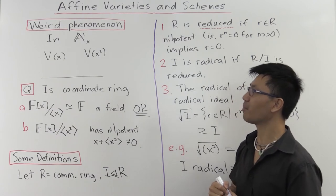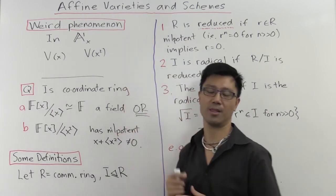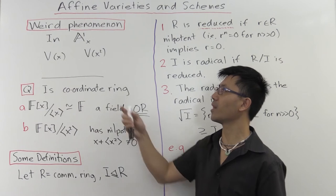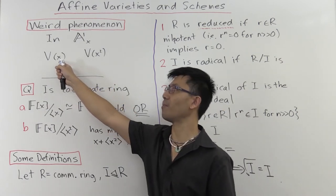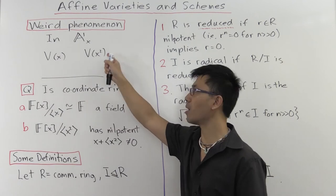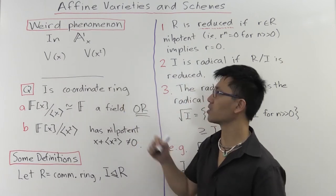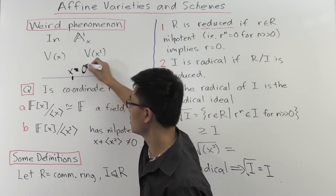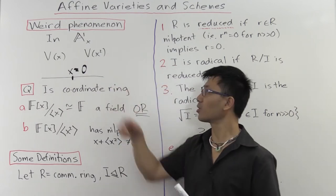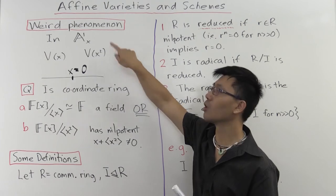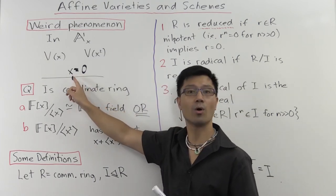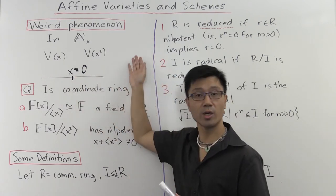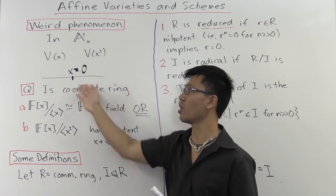Let me motivate this by talking about the following rather weird phenomenon. Suppose we're looking inside the affine line, and I want to look at the following varieties: the variety carved out by x equals 0, and the variety carved out by x squared equals 0. Of course, if x equals 0, you just have this point where x equals 0. But if you look at the set of points where x squared equals 0, you also get just this one point where x equals 0. Now we talked about the notion of a coordinate ring which captures this geometry.